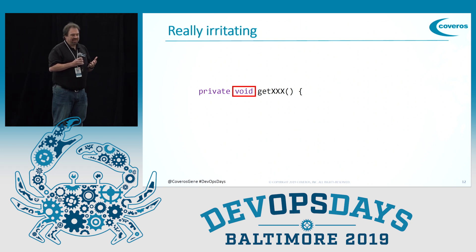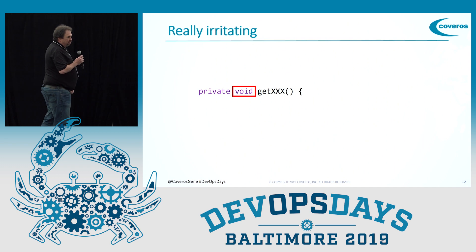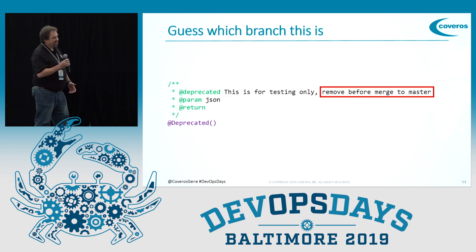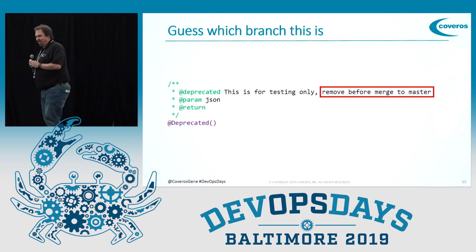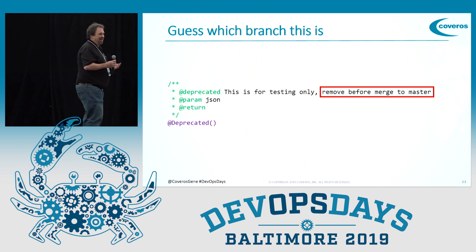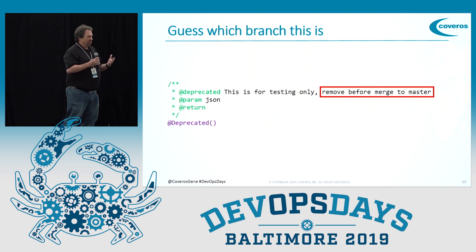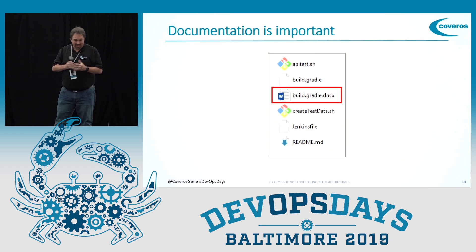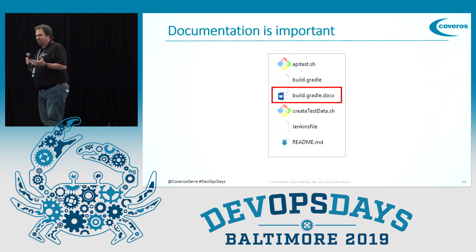And some things are irritating for other reasons. Like this code that naturally is found in the master branch of our code. But you know, at least it's documented — at least someone took the time to add the comment to point out why it was there. Because documentation is important.